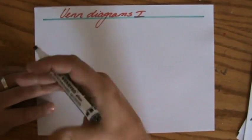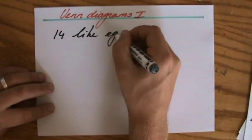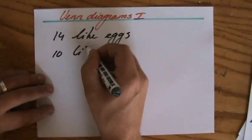So if you look at the guests, 14 people like eggs. Let me just write it down. 14 people like eggs, 10 people like bacon.